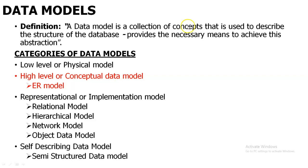So first of all, what is a data model? In DBMS we have multiple types of data models. A data model is used to describe or define the structure of a database — how we are going to create the database. There are multiple data models available: physical model, conceptual data model, representation model, and self-describing data model.